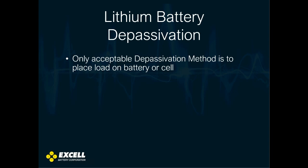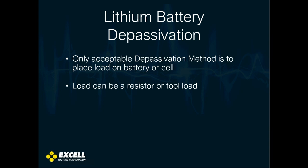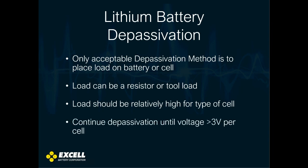The only acceptable method to depassivate is to place a load on a battery or cell. The load can be a resistor or your tool or device that places a load on the battery. As long as it draws sufficient current, it works for depassivation. The load should be relatively high for the type of cell, and you should continue depassivation until voltage reaches greater than 3 volts per cell.